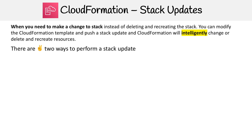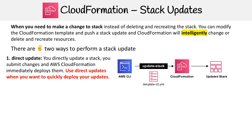There are two ways to perform stack updates in CloudFormation. The first is a direct update, which is very straightforward. You directly upload your template to CloudFormation — you could use the CLI for this — and it's going to immediately deploy. CloudFormation will just go ahead and apply that directly to your existing stack. This is super fast to do.